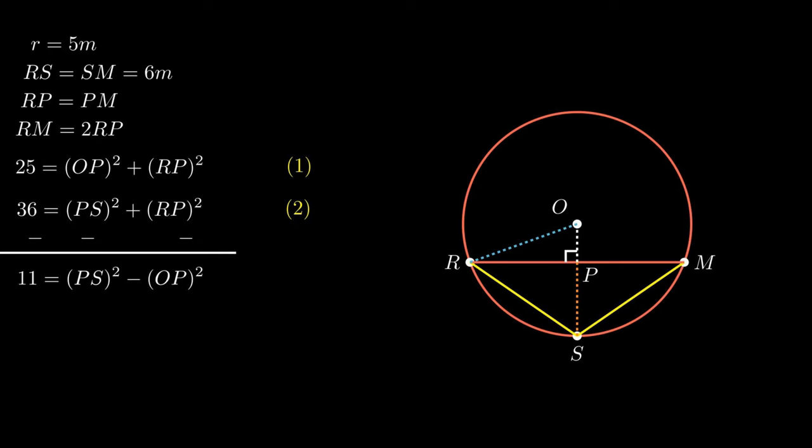Again this equation cannot be simplified as segment PS and segment OP are different variables. However, from the figure, the sum of segment OP and segment PS equals segment OS, which is the radius of the circle and is equal to 5 meters. Therefore, substitution of segments OP and PS into a single variable can be done.